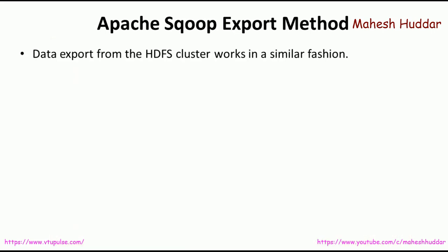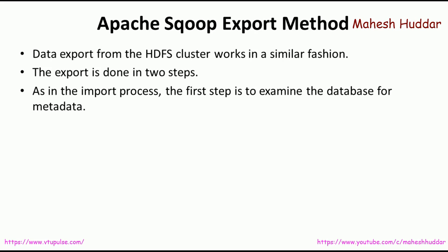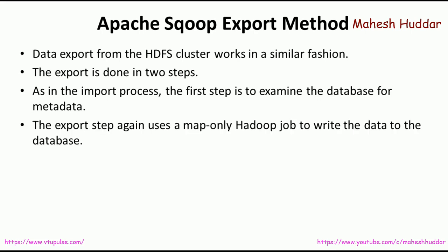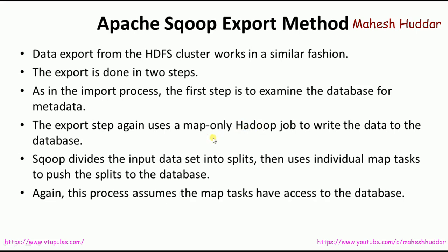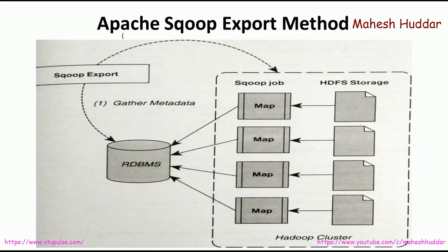Similarly, the data export from an HDFS cluster works in two steps. First, the database metadata information is gathered, and once the metadata information is available, a map-only Hadoop job is created so that the data from HDFS is written into RDBMS. Sqoop divides the data into different blocks, and these blocks are assigned to each mapper task so that the data is pushed into the database. One more thing to remember: whenever we try to export data from HDFS to a database, the mapper task must have access to the database. Without access, the data cannot be written into the database.